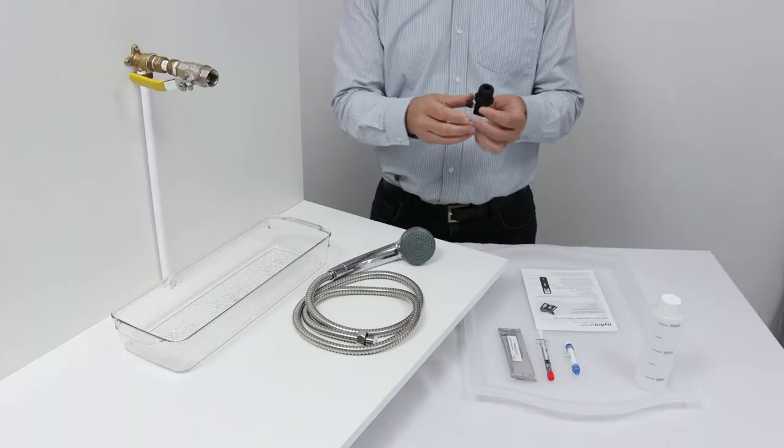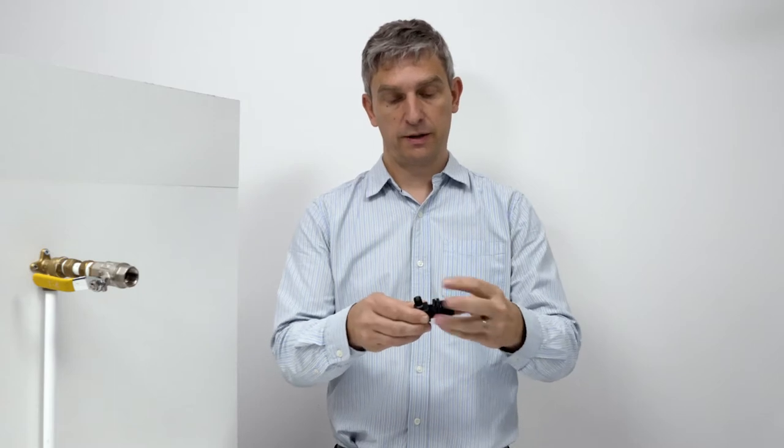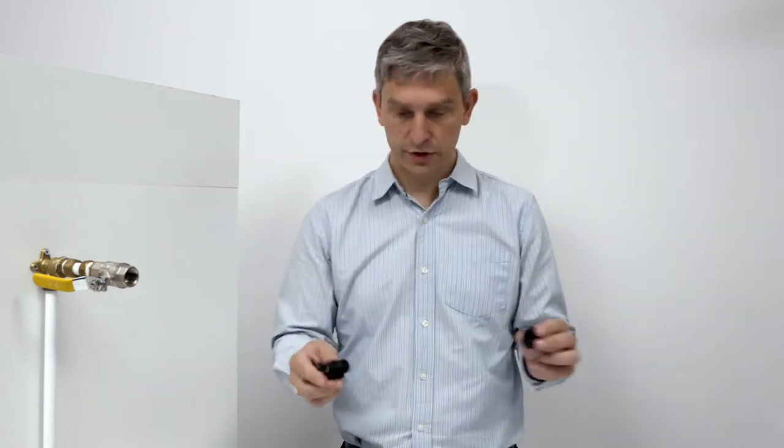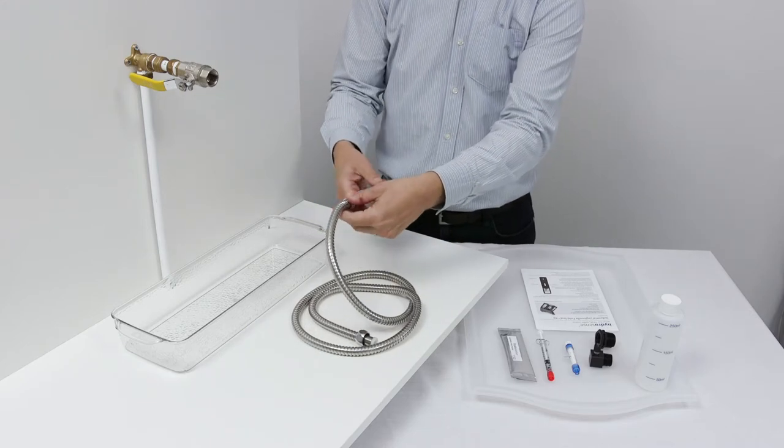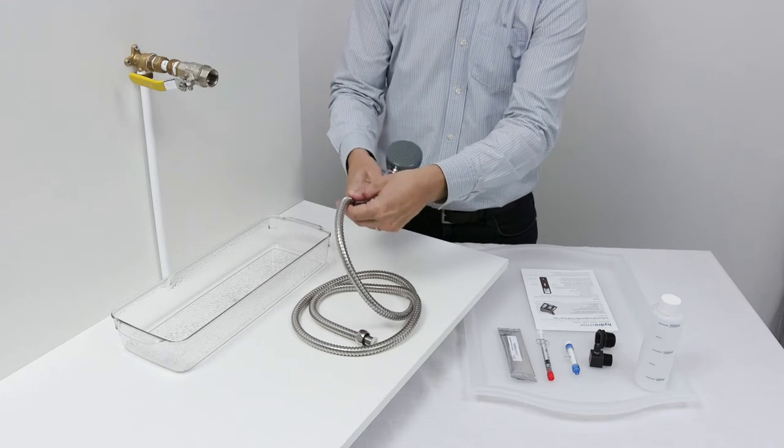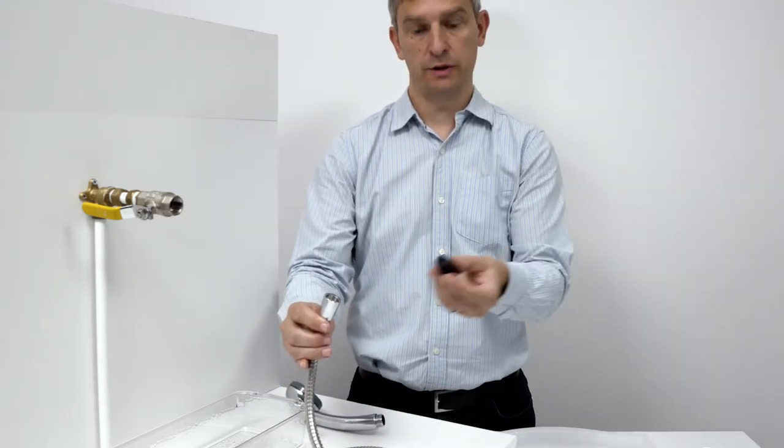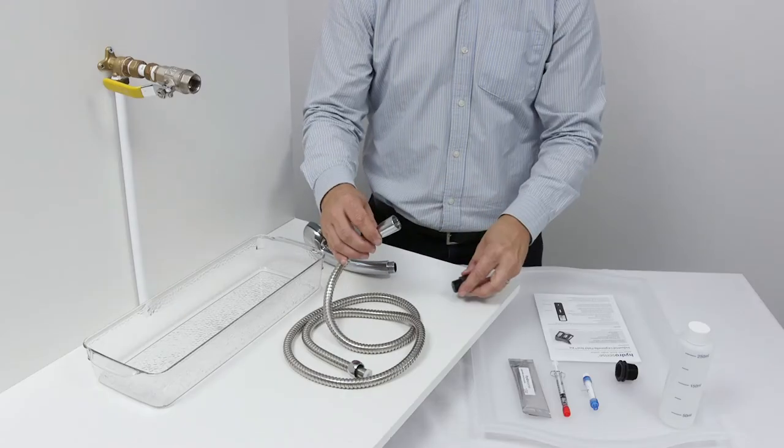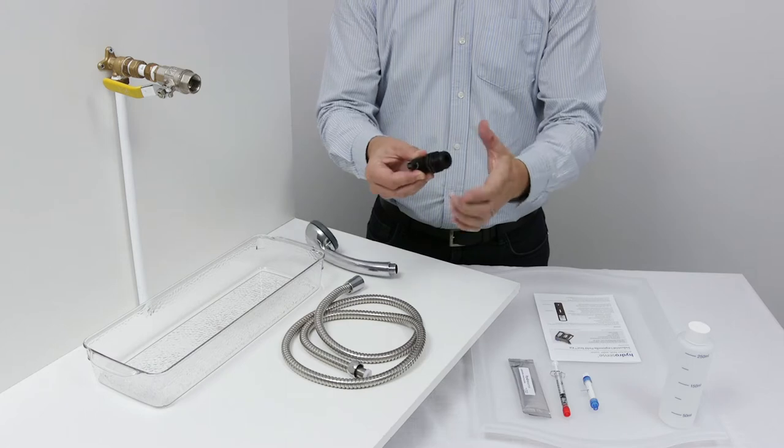The test kit comes with an adapter which has three-quarter inch and half-inch threaded adapters. If you want to sample from a shower head like we have here, detach the shower head—that should just unscrew. In this case, that's a half-inch fitting, so we can use the half-inch adapter. If however you needed the three-quarter inch, that just screws on like so.